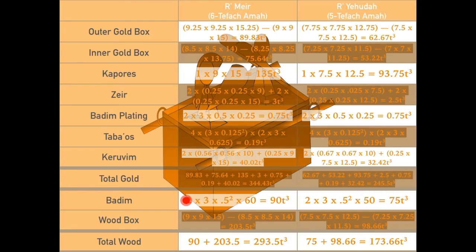The poles that went into the rings were 10 amos long, one tefach diameter. They were slightly bigger on their ends, such that once they were forced into the rings, they couldn't slip out without being forced out. But like I said, this thing is massive as it is. I'm still using rough numbers. According to Rabbi Meir, they had a volume of 90 cubic tefachim combined, and Rabbi Yehuda had a slightly smaller volume of 75 cubic tefachim.